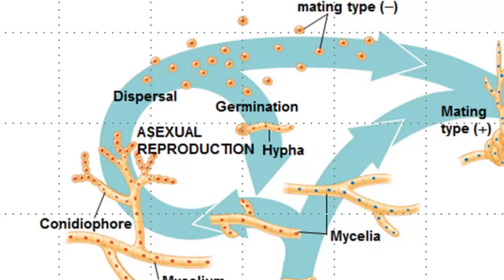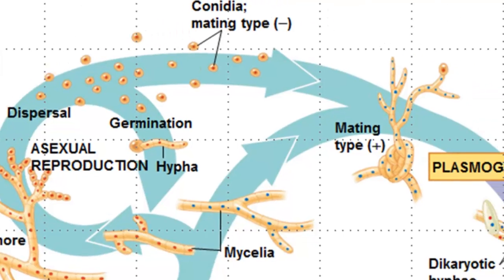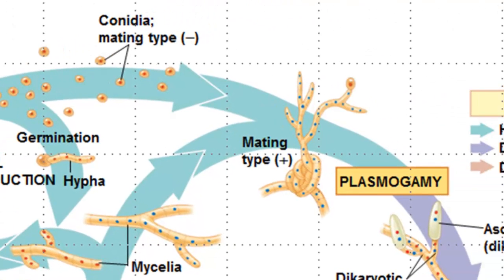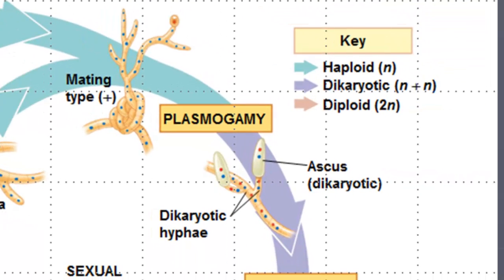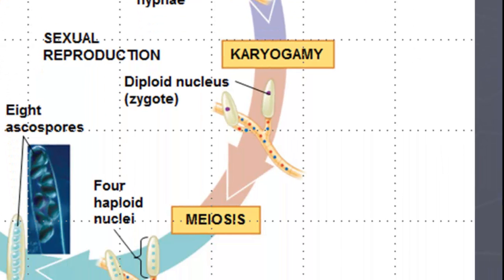Neurospora can also reproduce sexually by producing specialized hyphae. Conidia of the opposite mating type will fuse to these hyphae as a result of plasmogamy. The dikaryotic hyphae that results from plasmogamy produce many dikaryotic asci. When the environmental conditions are right, karyogamy can occur where the nuclei will fuse, producing a diploid nucleus.